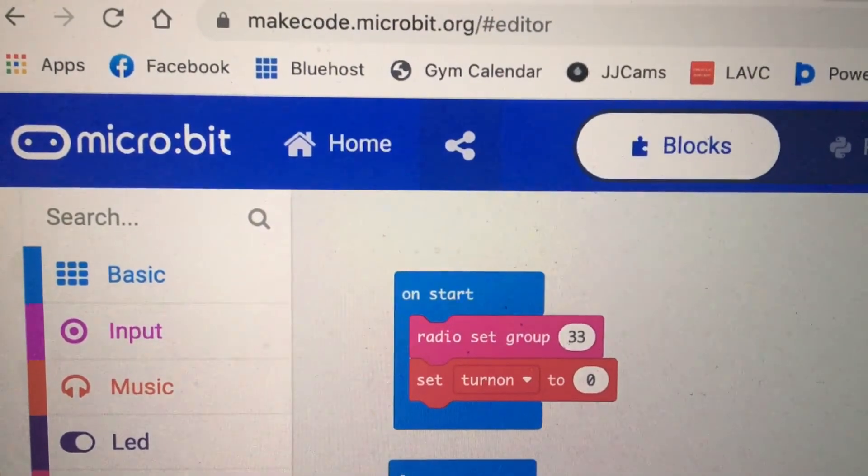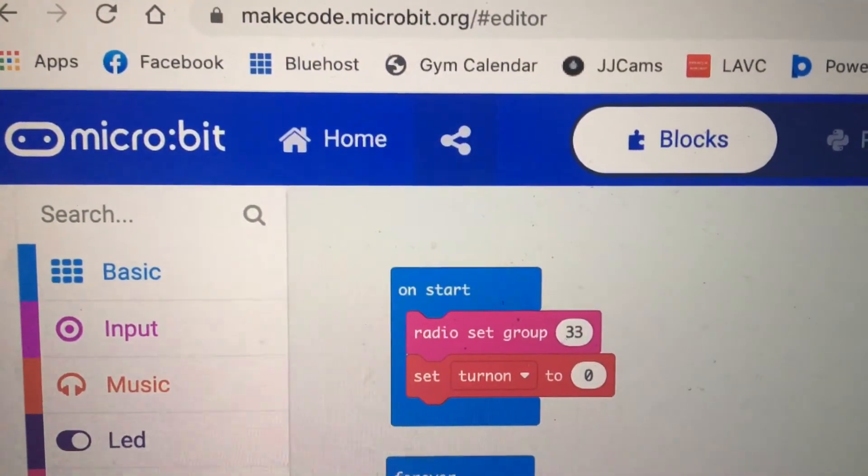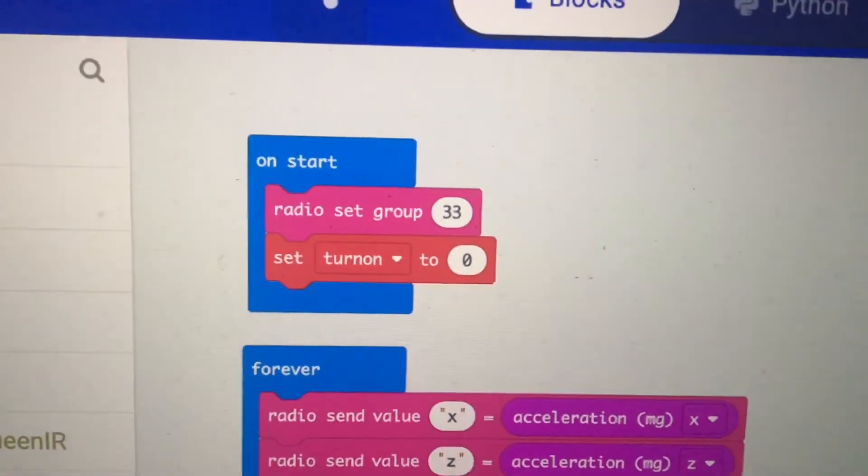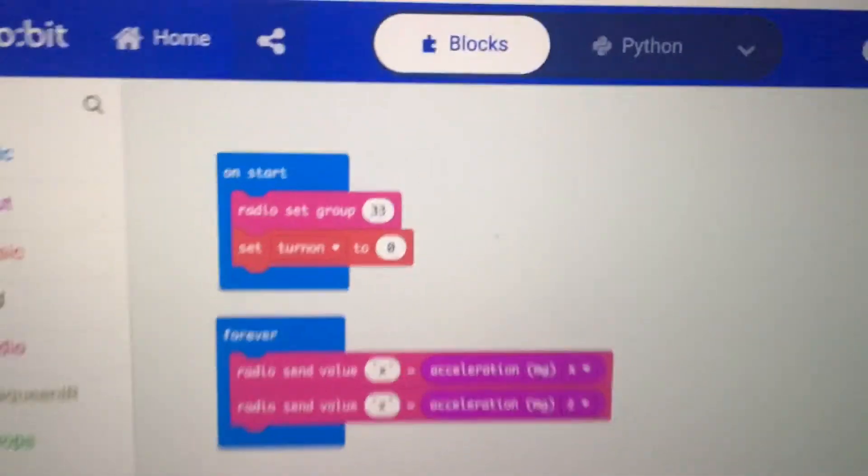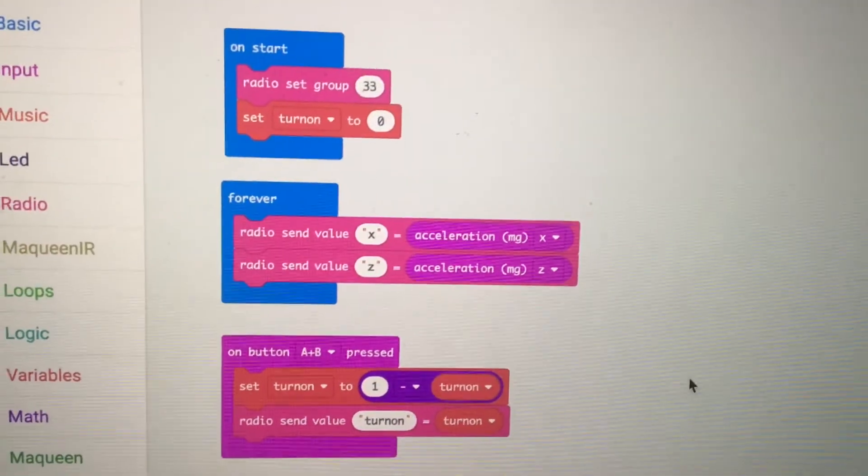Here's how I did it. I used the make code editor and this is the transmit program. That's the whole thing right there.